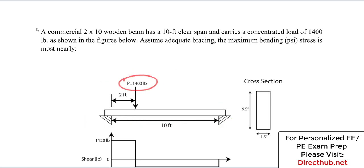It has a concentrated load of 1400 pounds, 2 feet away from this end, from this support, and the length is 10 feet. And we're given the cross section here for this 2x10 beam.